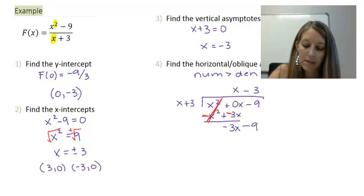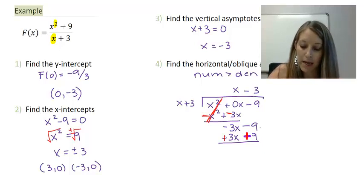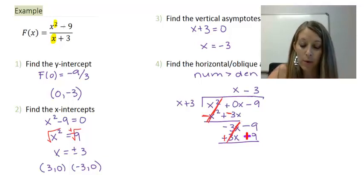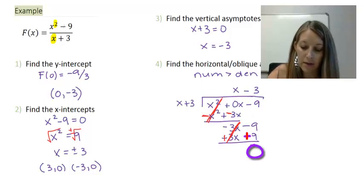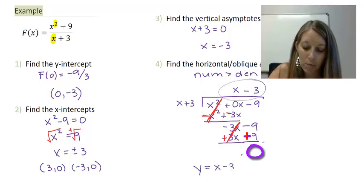Multiplying all of (x + 3) by -3: x times -3 gives -3x, and 3 times -3 gives -9. Subtracting by distributing the negative and switching signs, the -3x terms cancel and the 9s cancel out as well. We only care about the quotient, not the remainder, because that is where our oblique asymptote will be: y = x - 3.